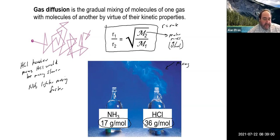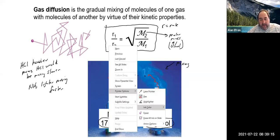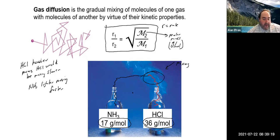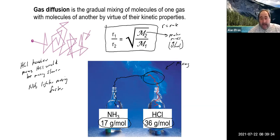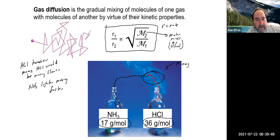NH₃ is lighter and moves faster, so it travels further before meeting the slower-moving HCl. The white ammonium chloride forms closer to the HCl side. If we calculated root mean square velocities for both, NH₃ would show a significantly higher velocity than HCl, confirming it reaches the mixing point first.